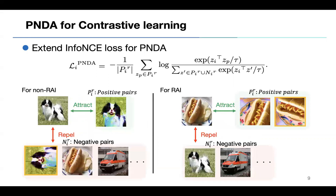After sampling RAI, we apply PNDA for contrastive learning. For RAI, the rotated images are treated as positives, and for non-RAI, the rotated images are treated as negatives. We use the extended InfoNCE loss for PNDA.